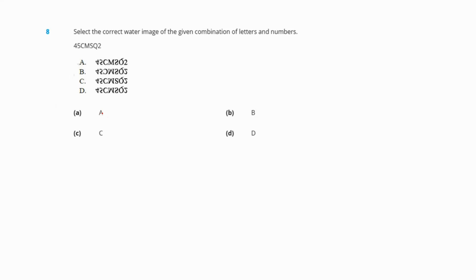Question 8: Select the correct water image of the given combination of letters and numbers 45CMSQ2. From the sequence, we can very easily see that option A is the correct answer, which indicates the correct mirror image of the given combination.